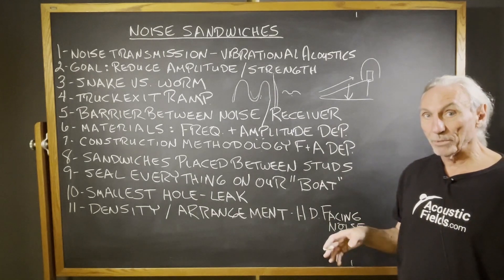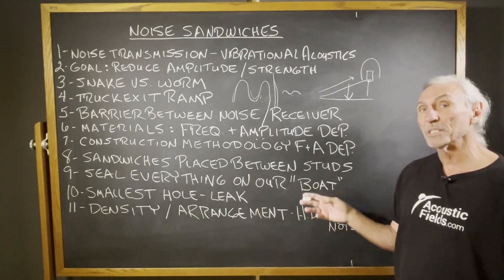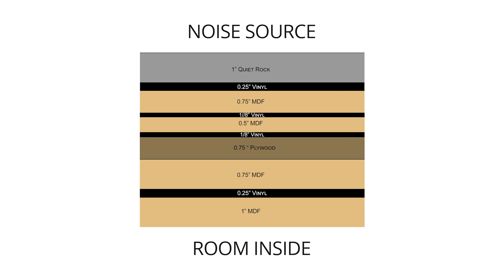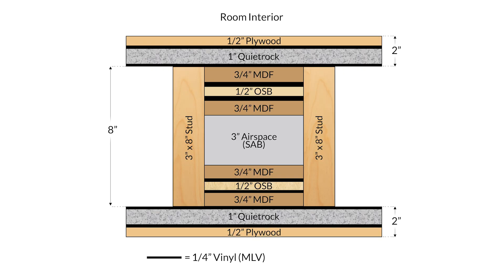The sandwiches go between the studs — you can see some examples here. You can see the layering of the materials, mass loaded vinyl in some of the examples, different densities, and the arrangement of those materials. That's all based on certain noise measurements. A whole different set of noise measurements means a completely different barrier.